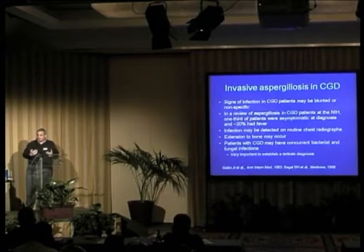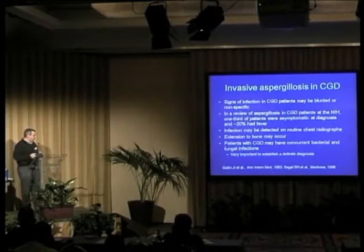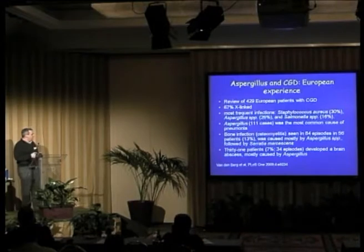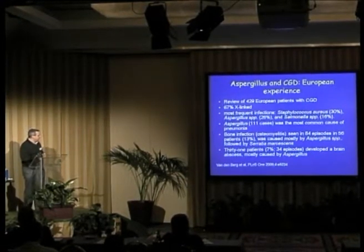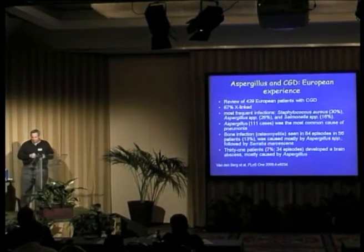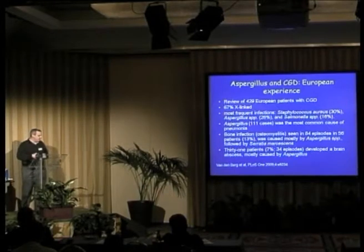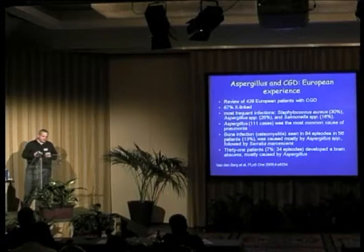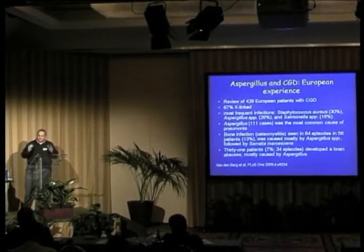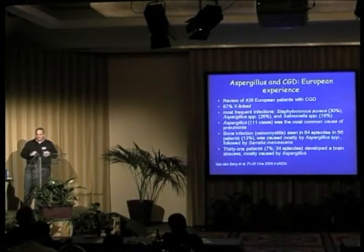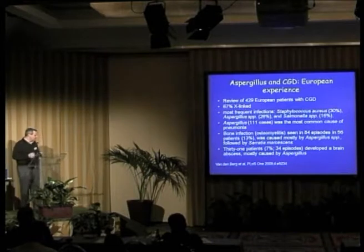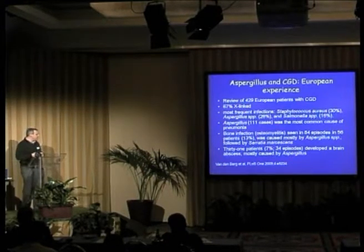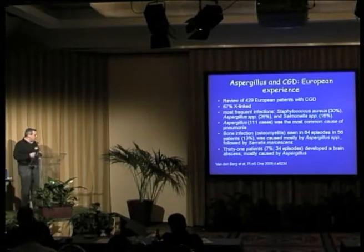In contrast to other people who have pneumonia — with fever, cough, shortness of breath, feeling acutely ill — that is often lacking in CGD, which is why you have to have a high level of vigilance. There was a large published European experience of 429 CGD patients showing the usual range of bacterial and fungal pathogens. CGD patients are not at risk for all infections but only a specific subset. Aspergillus was amongst the most frequent infections, with 111 cases of aspergillosis — the most common cause of pneumonia.